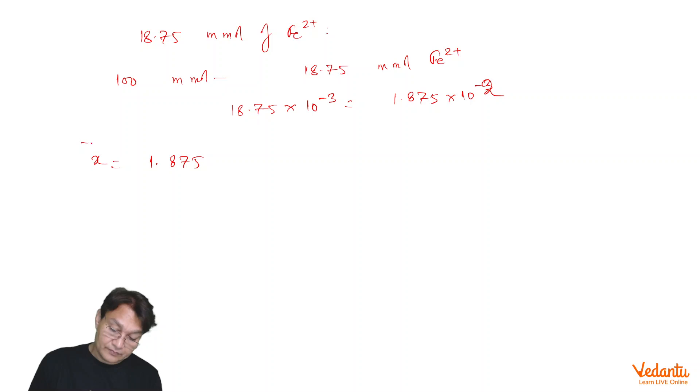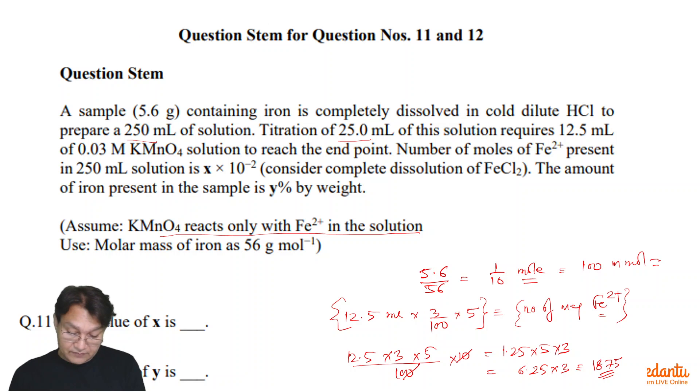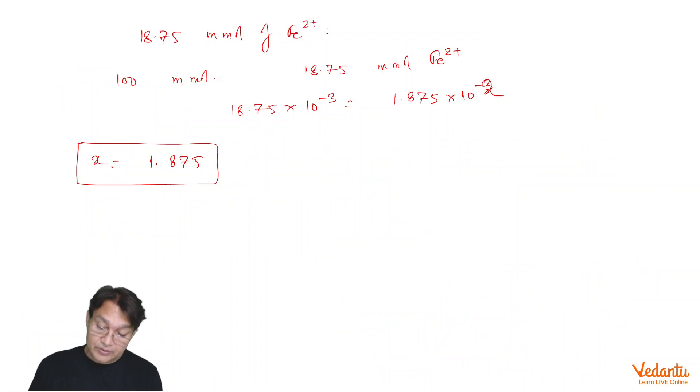That is x, first answer is this. Now let us see what is the second answer, what is y. The amount of iron present in the sample is y percent by weight. So how much iron is present here? Iron present here is equals to, if total millimoles out of 100 Fe minus 18.75, so it is coming out to be 81.25 millimoles of iron and 18.75 millimoles of Fe2+.